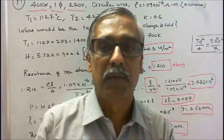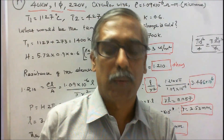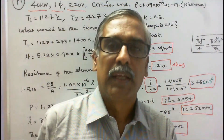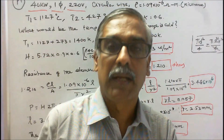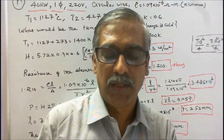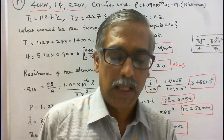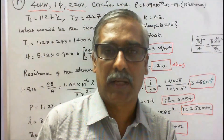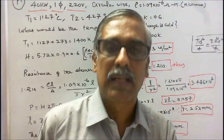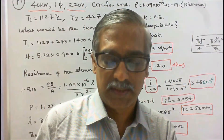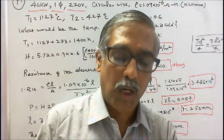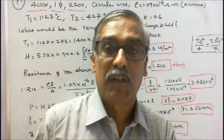A 40kW single-phase 220V resistance oven employs circular nichrome wire for its heating element. If the wire temperature is not to exceed 1127°C and the temperature of the charge is to be 427°C, calculate the size and length of the wire required. Assume emissivity is 0.9, radiation efficiency is 0.6, and resistivity of the wire is 1.09×10⁻⁶ ohm-meter. What would be the temperature of the wire when the charge is cold?